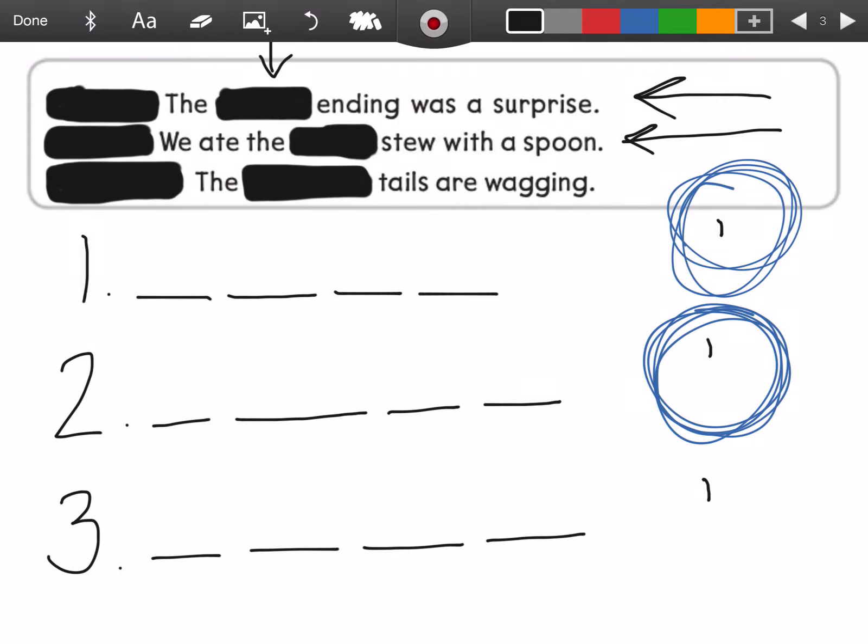Don't forget the apostrophe. And if there's more than one dog, does it go before the s or after the s? Do your best. Watch this video again if you need to get a reminder.